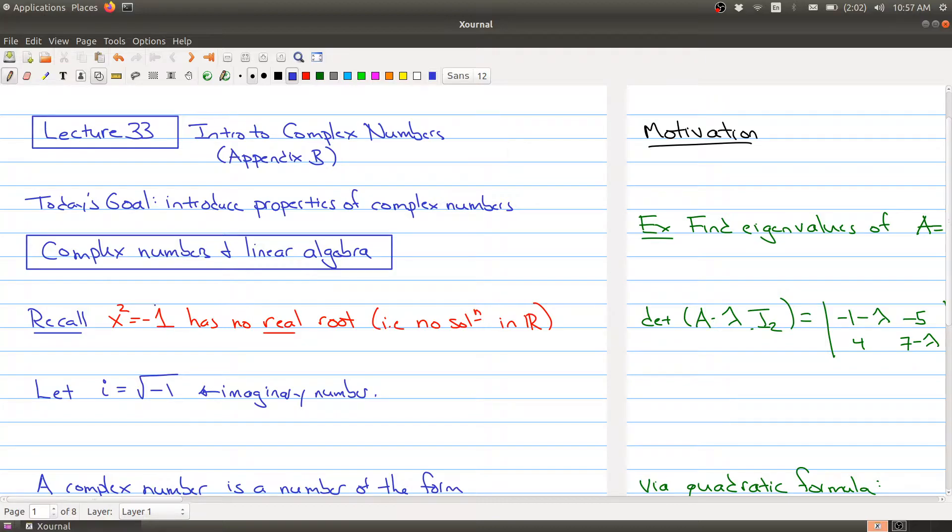More importantly, i is a solution to the equation, because if I look at i squared, I'm taking the square root of negative one squared, and square roots and squares cancel each other out, so I get minus one.